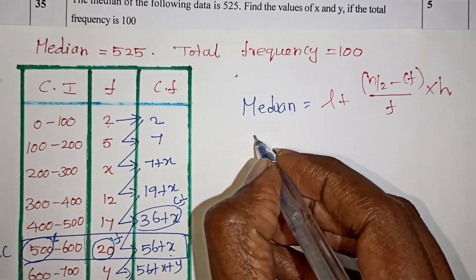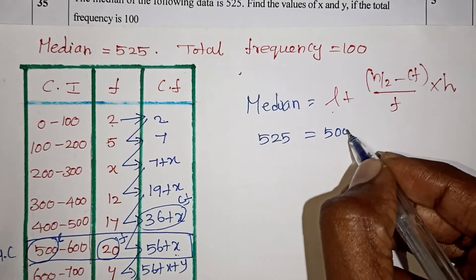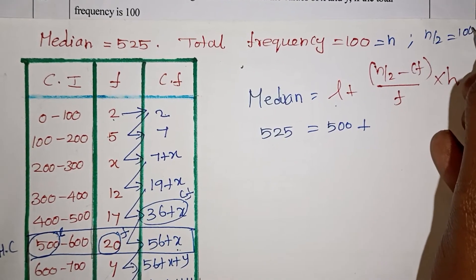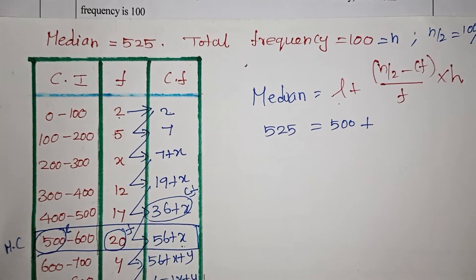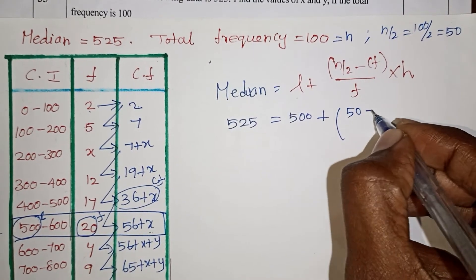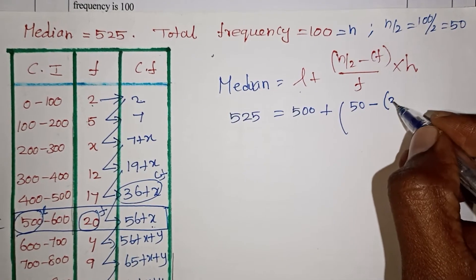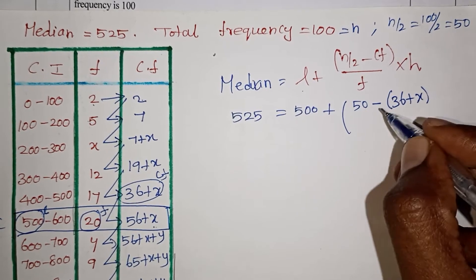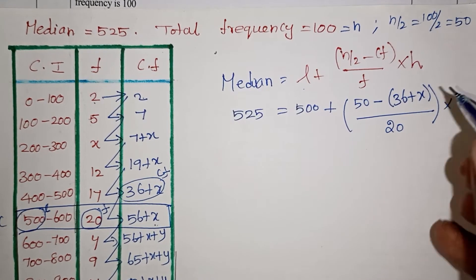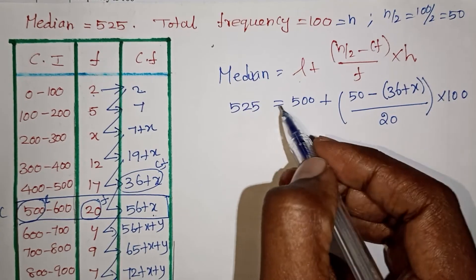Median is 525, so 525 equals L which is 500, plus n by 2. Total frequency n is 100, so n by 2 is 50. So 50 minus cf, which is 36 plus x, in brackets, divided by f which is 20, multiplied by h, the class size of 100.